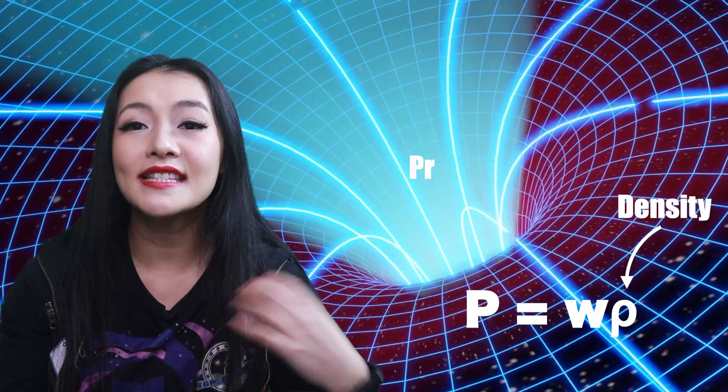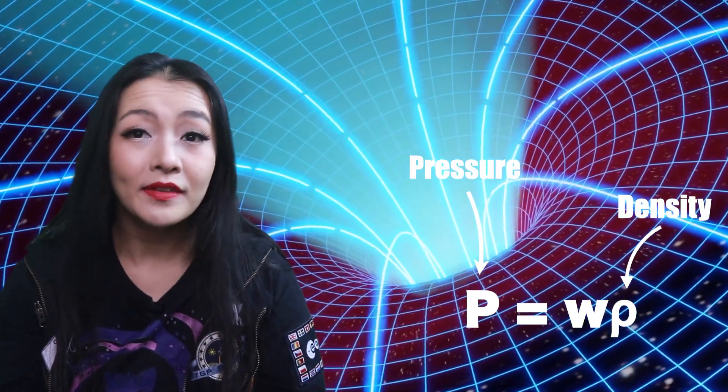P equals W times rho, that relates density to pressure. In the case of dark energy, W is minus one, or lower. From GR, we know that the energy density of the cosmological constant is uniform and constant, unlike radiation and matter. So it does not get diluted as the universe expands.